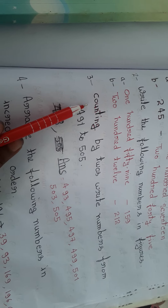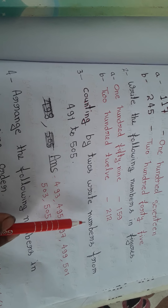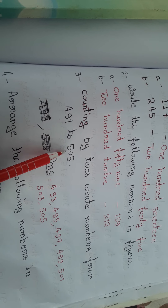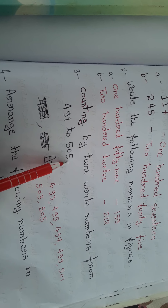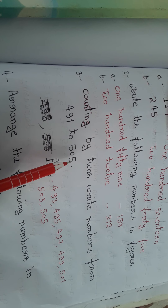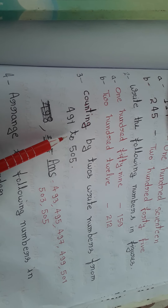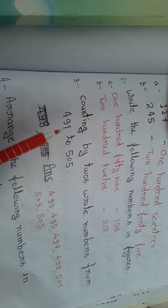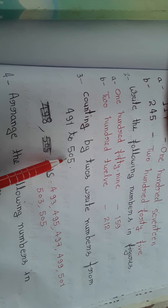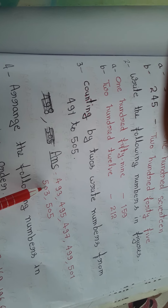Question number three: counting by two, write numbers from four hundred ninety-one to five hundred five. We have to add two each time between 491 and 505. We start from four hundred ninety-one and go up to five hundred five.